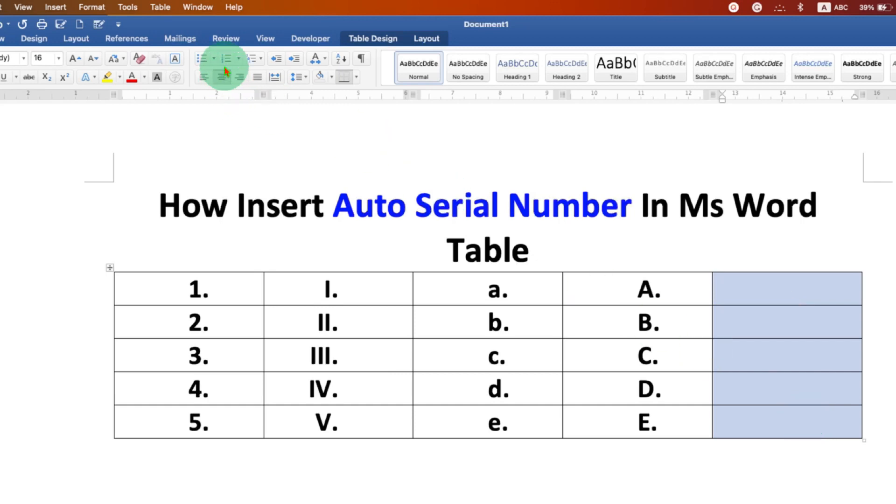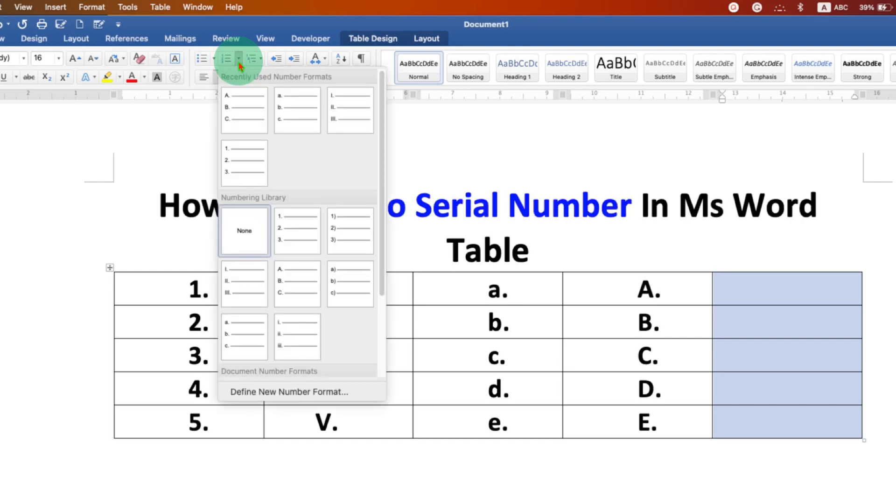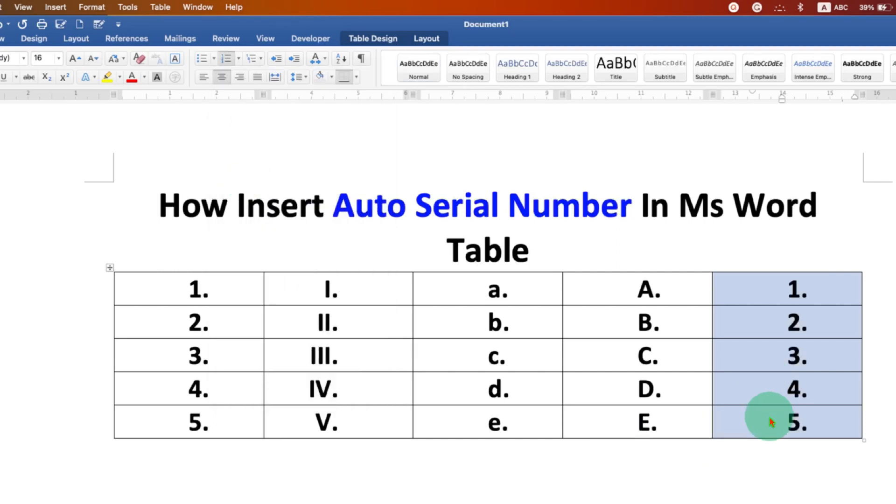you will see here the option of 123. You just have to click on the drop-down option here, and you will see various formats. For example, 123, and the numbering will be auto-generated.